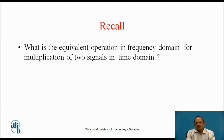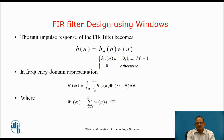Let us recall what is the equivalent operation in the frequency domain for multiplication of two signals in the time domain. Because in this case, we are obtaining the impulse response of the filter by multiplying hd(n) — the desired impulse response — by the window function. We know that multiplication in the time domain is equivalent to convolution in the frequency domain.